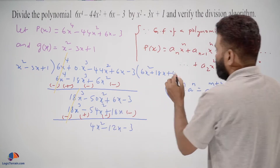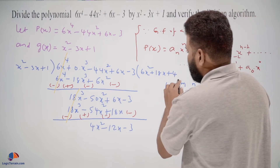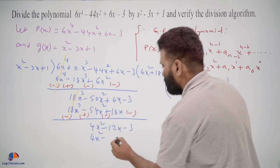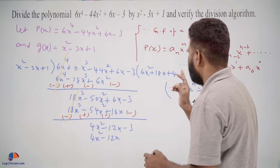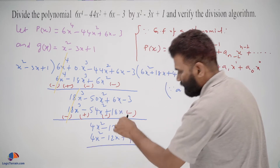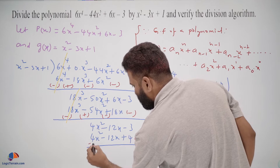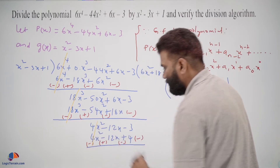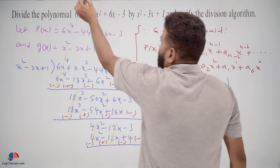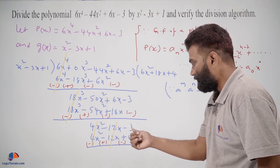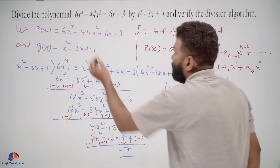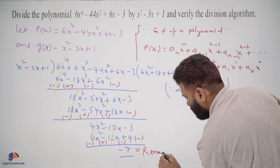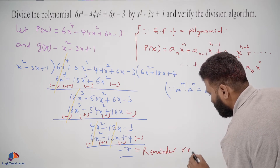To get the 4x square term, we multiply the entire divisor by plus 4: 4 times x square is 4x square, minus 3 times 4 gives minus 12x, plus 4. After subtracting, 4x square minus 4x square cancels, minus 12x plus 12x cancels, and we are left with minus 3 minus 4, which gives minus 7. This is our remainder.